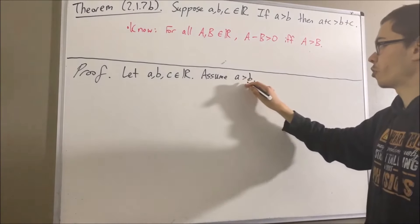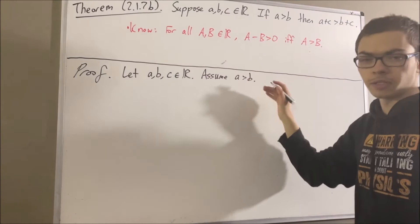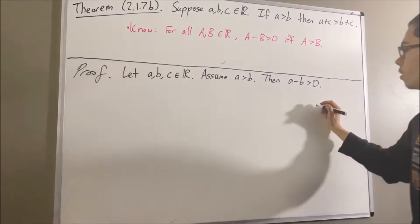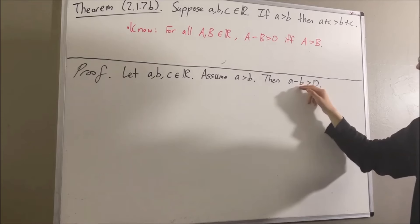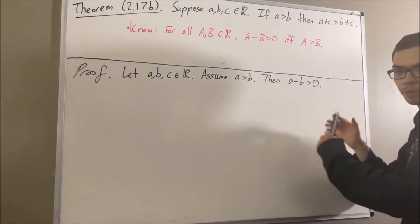Now since A is greater than B, from this fact that we have here, this means that A minus B is greater than zero. But really, A minus B is the same thing as A plus C minus, in parentheses, B plus C.